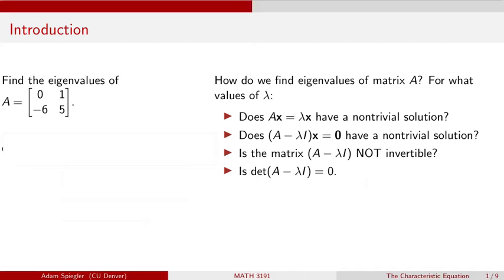One way to determine whether a matrix is invertible is to look at its determinant. If the determinant equals zero, the matrix is not invertible. If the determinant is not equal to zero, the matrix is invertible. So in this case, we want A minus lambda I to not be invertible.